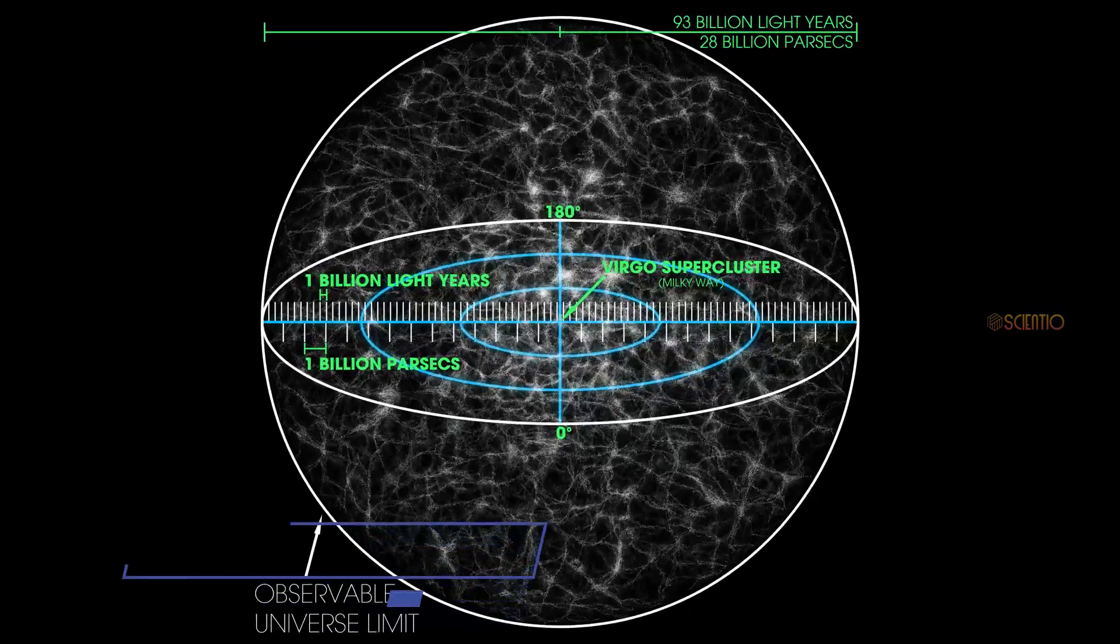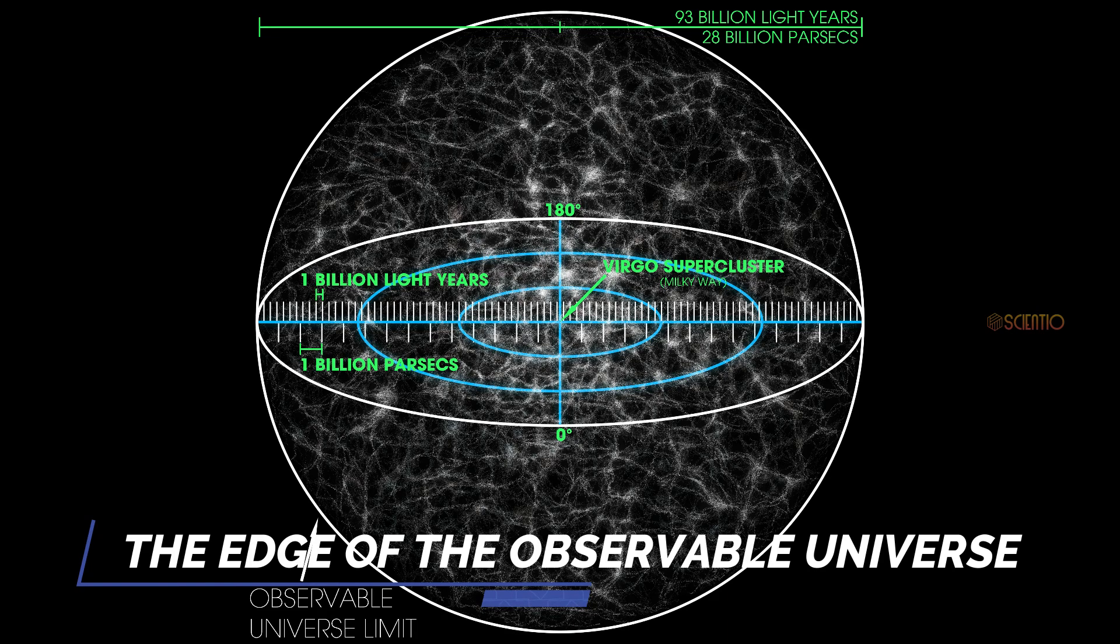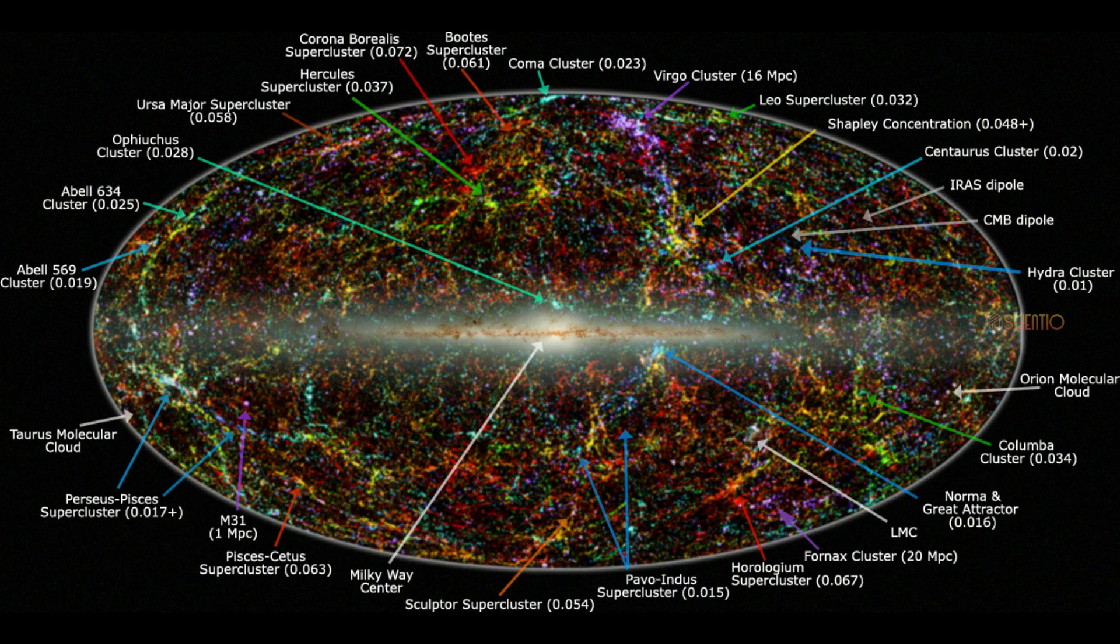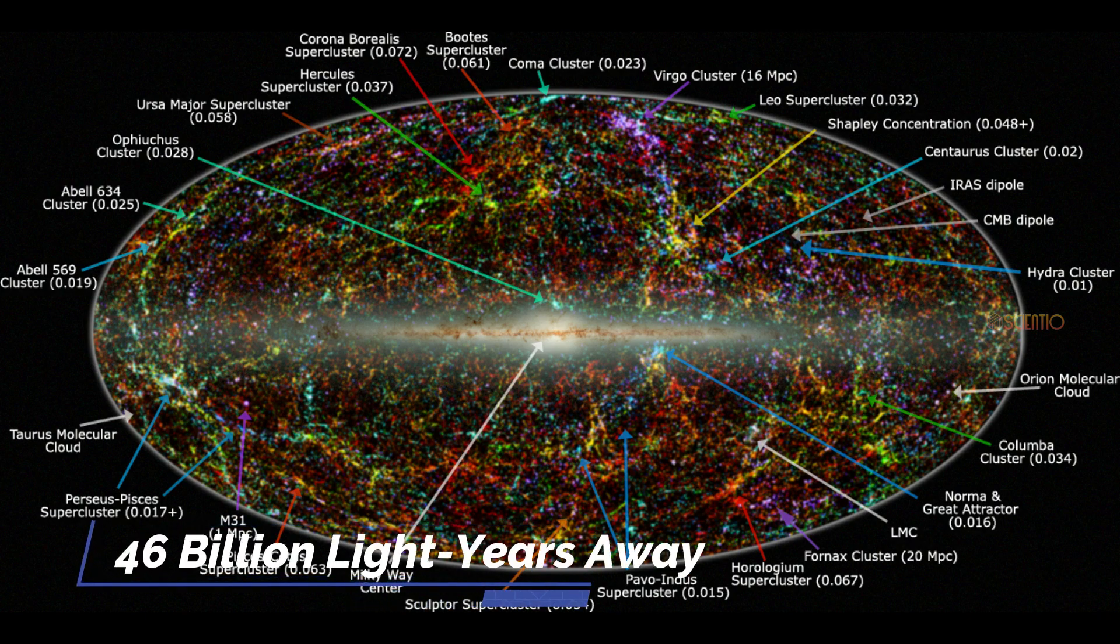The edge of the observable universe, this is the furthest point in space towards which we can observe. Light from further away has not yet reached us, and may never do so due to the expansion of the universe and the limitations of our technology. The exact location of the edge of the observable universe is not yet known, but is thought to be around 46 billion light-years away.